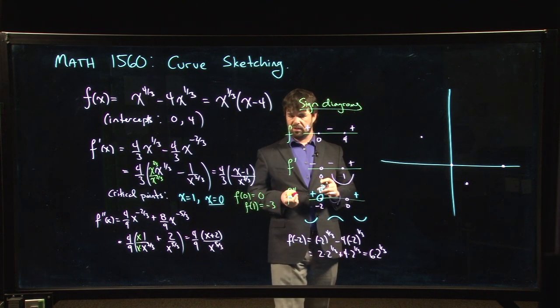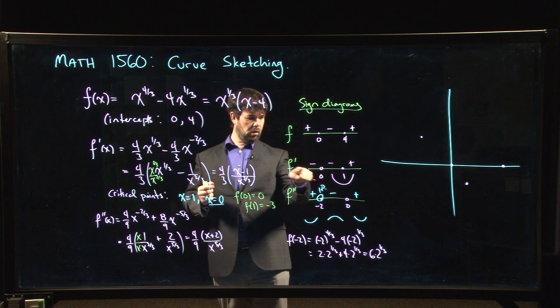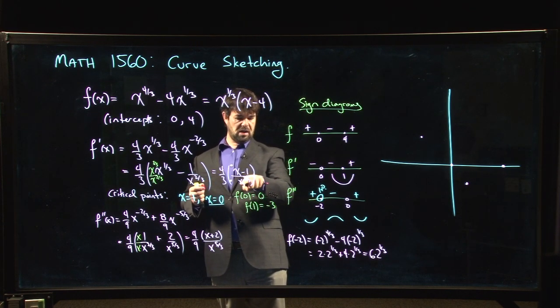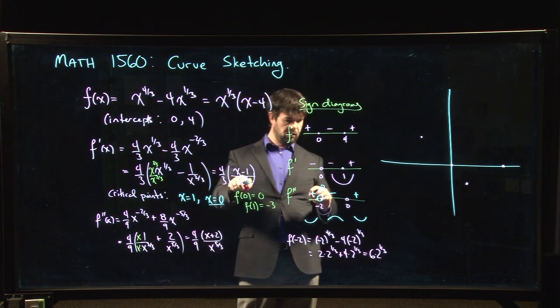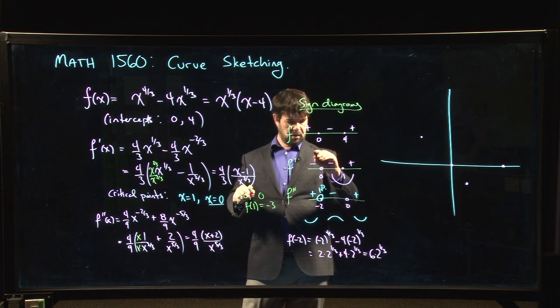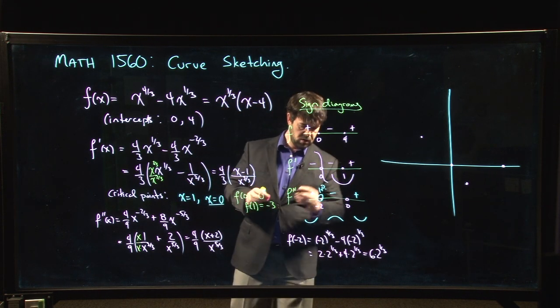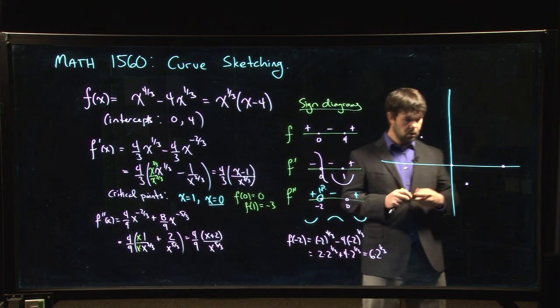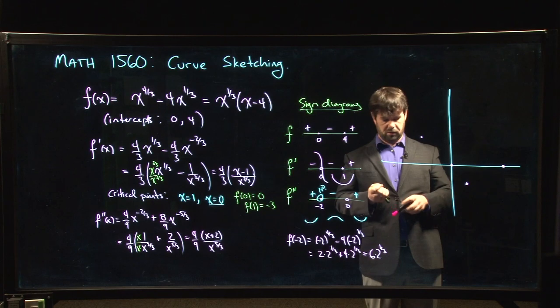So by the way, what's happening at 0? As we get close to 0, F prime is negative on both sides, and the value is becoming infinite, because we're dividing by 0. So that's telling me that I have a vertical tangent as I pass through 0.